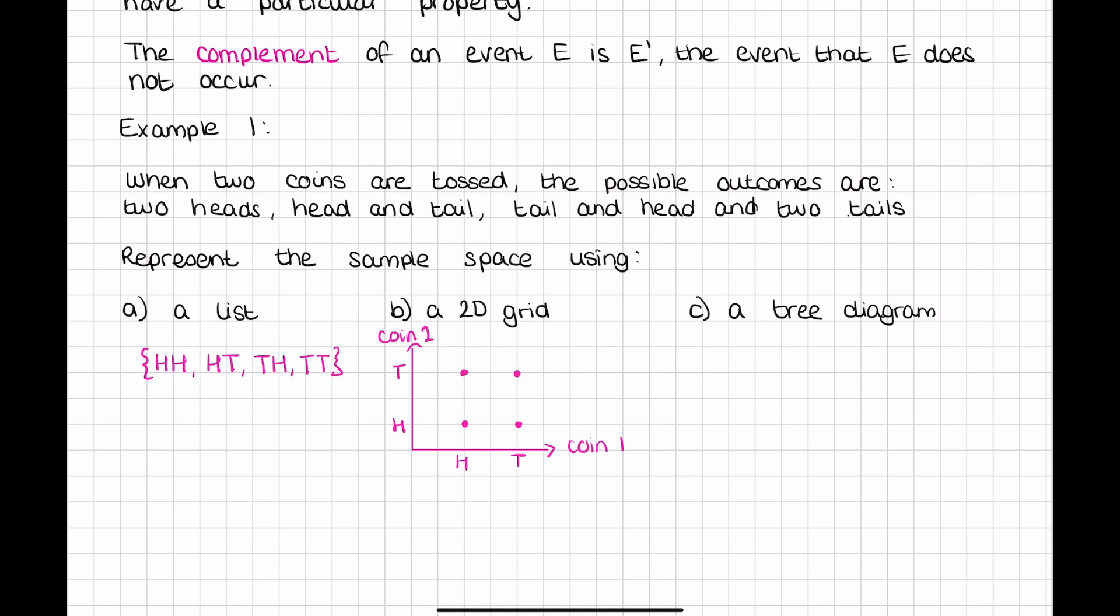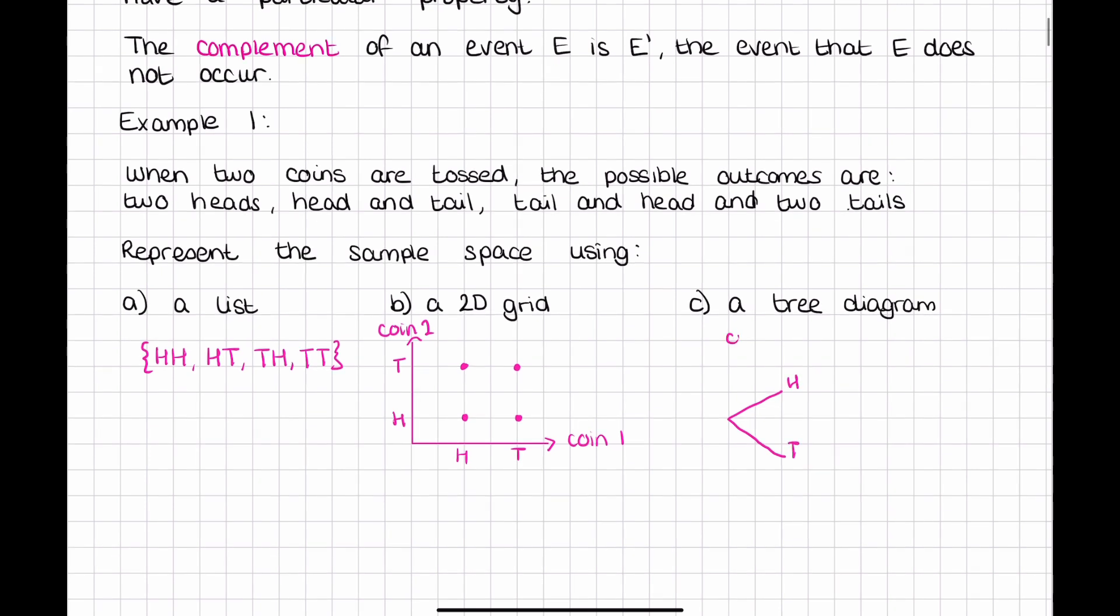Lastly is a tree diagram. We have the first coin which could be a head or a tail, so this is coin one. Then coin two comes off that, so we could have a head first and then a head or a tail, or a tail first and then the second coin could have a head or a tail. So that's our three different options of representing sample spaces.